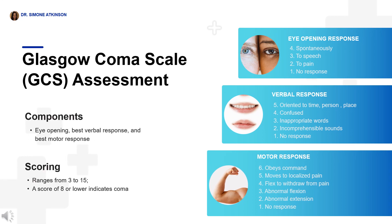The Glasgow Coma Scale is a crucial tool for assessing a patient's level of consciousness. It consists of three components: eye opening, scored 1 to 4; best verbal response, scored 1 to 5; and best motor response, scored 1 to 6. The total Glasgow Coma Score ranges from 3 to 15, with a score of 8 or lower typically indicating a state of coma.